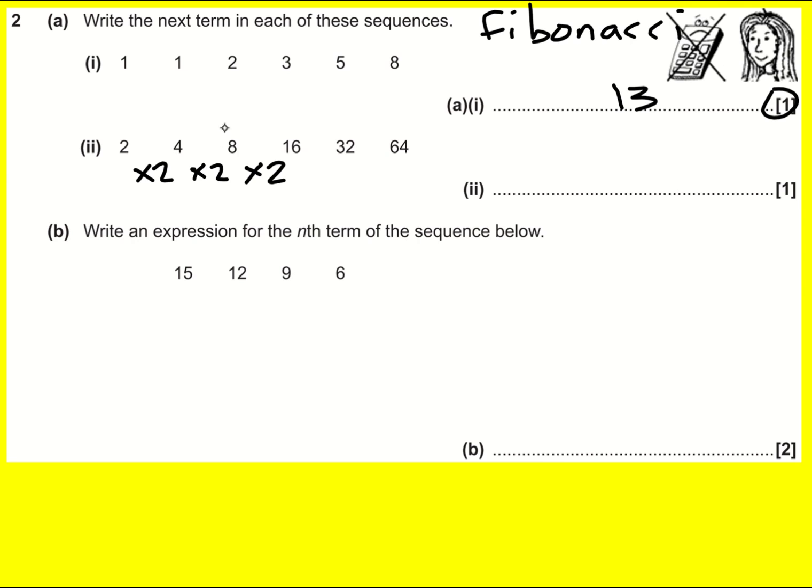Two to the power of one, two squared, two cubed, two to the four. You don't necessarily need to know that, but that is correct. The last one will be 64 times two, which is 128. That's the next term of the sequence.